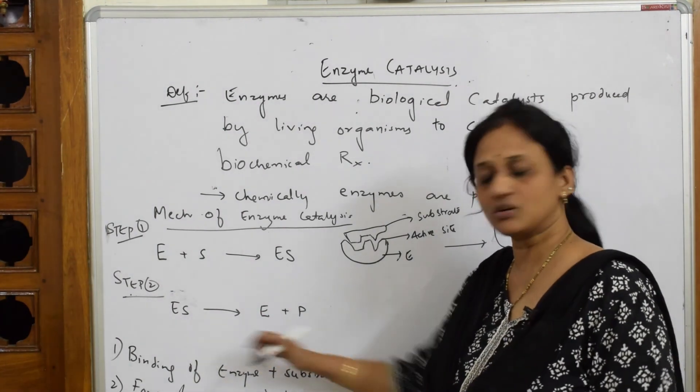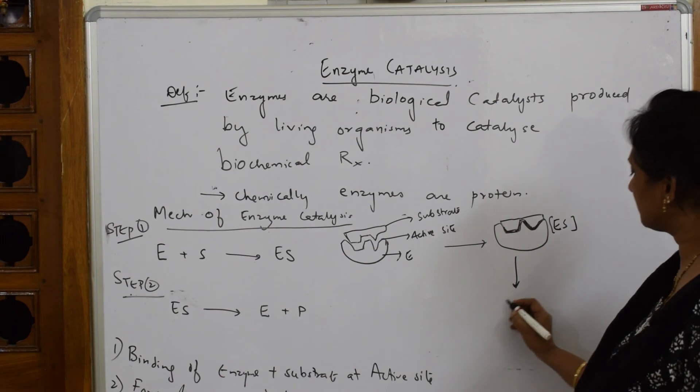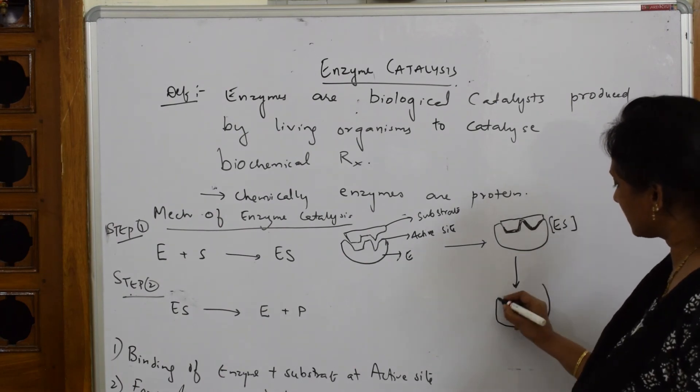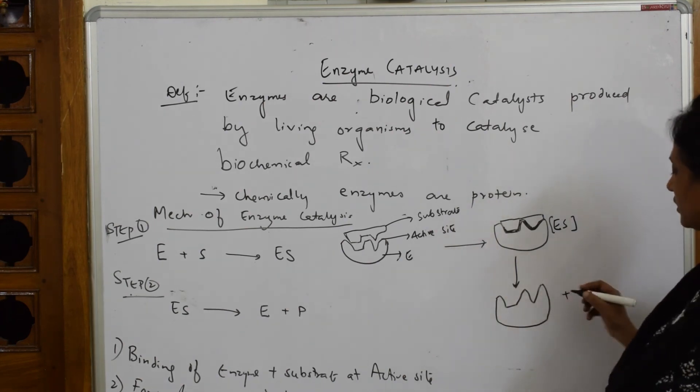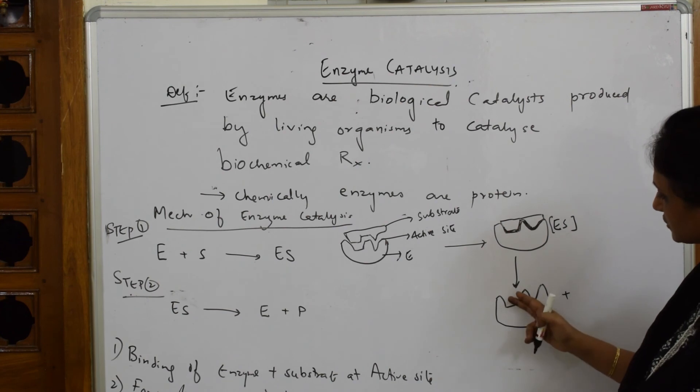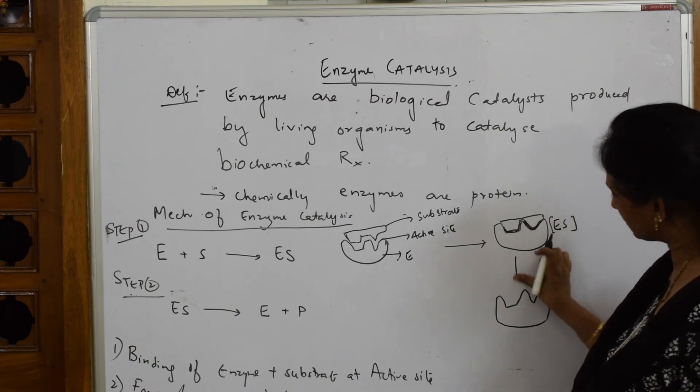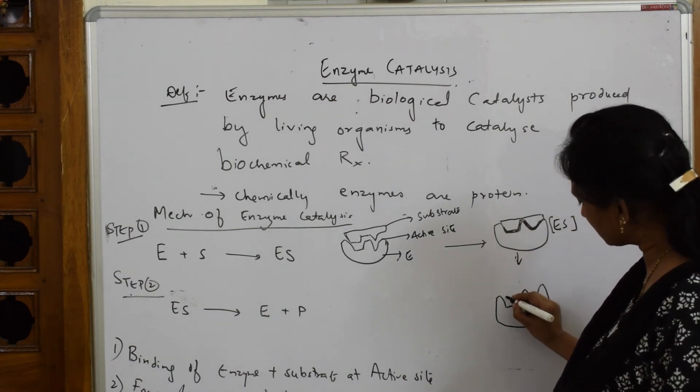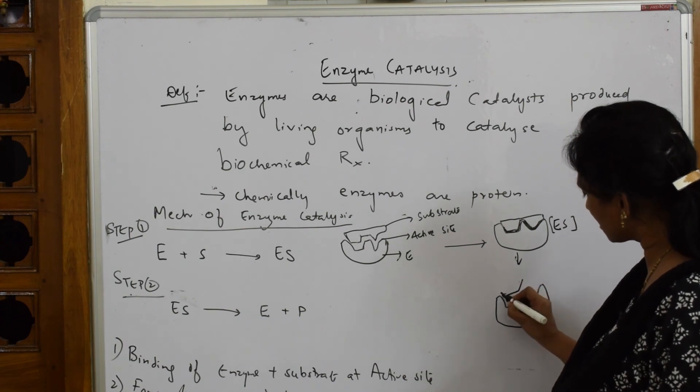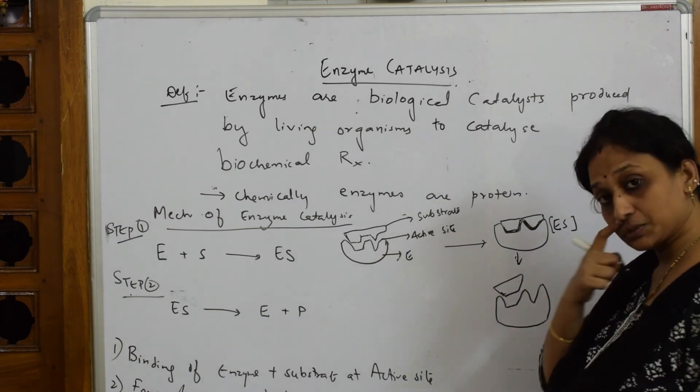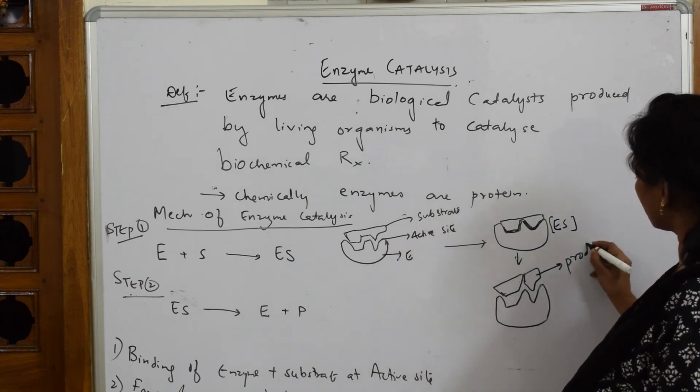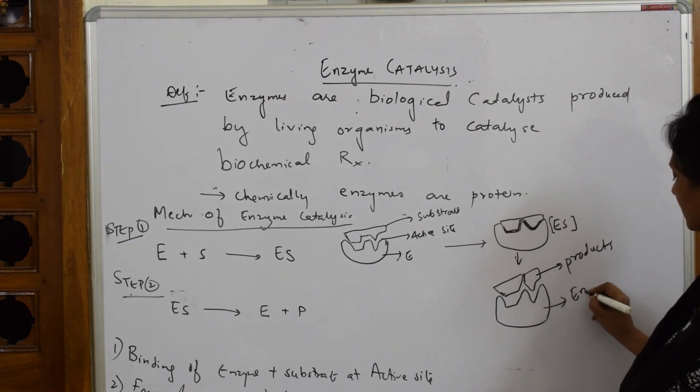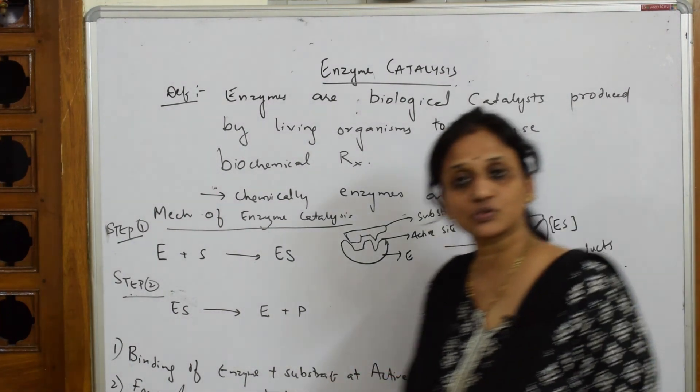Once this is formed, after that this enzyme substrate complex further breaks up and forms enzyme and product. So your this is your enzyme again. Enzyme is out. And your products. So two things here. This one side and one side. It breaks up into exactly. You can draw on this diagram here also. Desorption. So this is one product. Suppose I'm drawing two. So this is one product. So these are products. And this is your enzyme. This is it. This is what you have done.